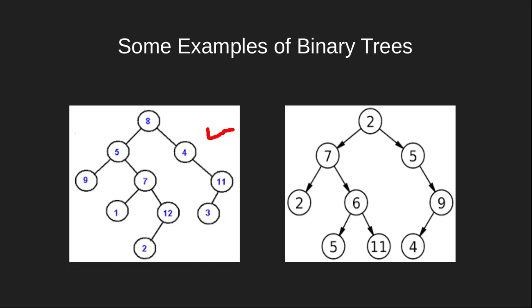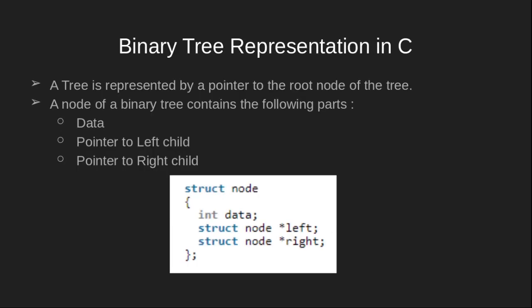Now we will look at binary tree representation in C. To represent a binary tree, we define a structure which contains three parts: first, a data part to store the data value; second, a pointer to the left child that stores the address of the left child; and third, a pointer to the right child. A binary tree is represented by a pointer pointing towards the root node. In C, we make a structure called node with an integer data part and two pointers for the left child and the right child.